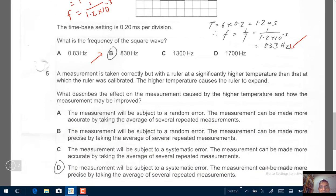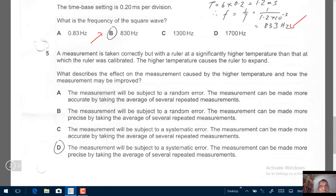Question number 5. Measurement is taken correctly, but with a ruler at a significantly higher temperature than that at which the ruler was calibrated. So the higher temperature here causes the ruler to expand. What describes the effect on the measurement caused by the higher temperature and how the measurement may be improved? You can see that we are taking measurements by a defective measuring instrument. Therefore, we know we're going to have systematic error.